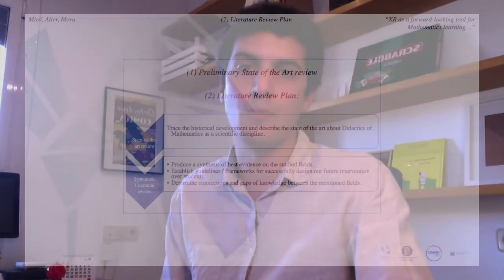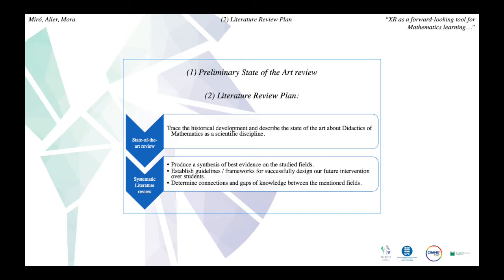Having stated the context, motivation, and problem statement, the next stage is the state of the art research. Prior to the full literature review plan, we analyzed some of the latest doctoral theses in Spanish universities matching our keywords. We then defined a more specific literature review focused in two phases: first, a state of the art review tracing the historical development of mathematics didactics as a scientific discipline; and second, a systematic review with three objectives — synthesizing best evidence on mathematics didactics, dyslexia, ADHD, and XR identification strategies; establishing guidelines and frameworks for successful design and intervention; and determining connections and gaps of knowledge between these fields.